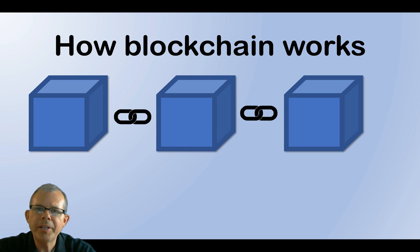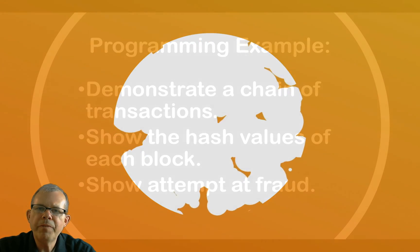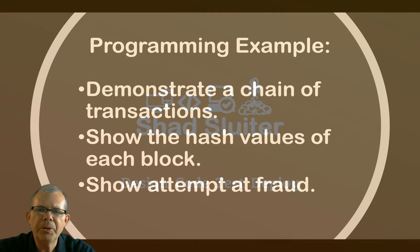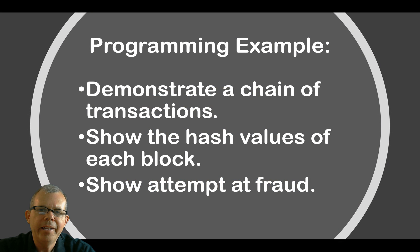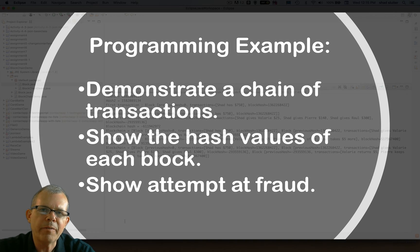In this video we're going to write some computer code to demonstrate how blockchain works. In a previous video I showed you some of the theory, now we're going to actually do some computer code so we can see specifically what we're talking about. In the next few minutes we're going to create a program that will demonstrate a chain of blocks, some transactions, then we're going to hash each of those, and I will show you what happens if somebody tries to commit some fraud and we will quickly identify it with our blockchain.